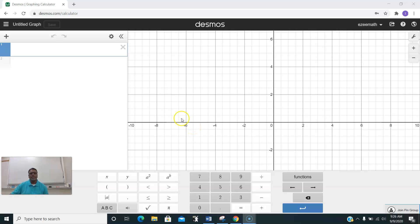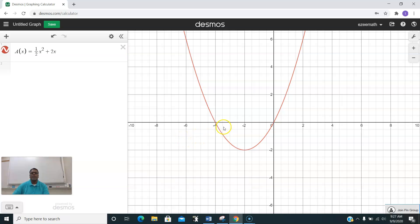In this video we are going to look at the area function, area of a triangle. You have a quadratic function describing the area of a triangle. I have here a(x) equals half x squared, or 0.5x squared, plus 2x. This is a quadratic function and its graph is already there.